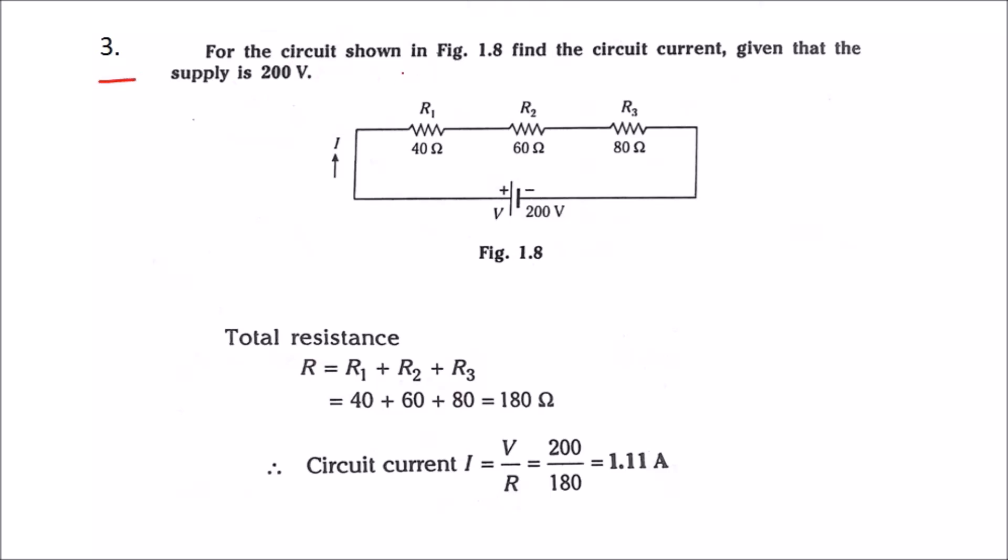Number three: for the circuit shown in figure 1.8, find the circuit current given that the supply voltage is 200 volts. This circuit consists of three resistances which are connected in series: R1, R2, and R3.